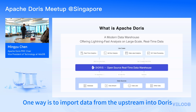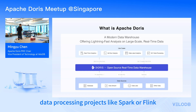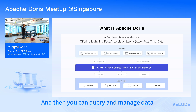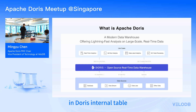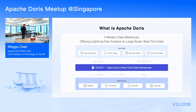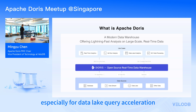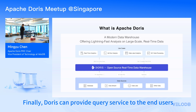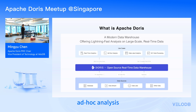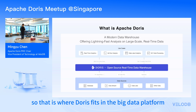Doris can access data in two ways. One way is to import data from upstream into Doris using a data pipeline or processing project like Spark or Flink, then query and manage data like a Doris internal table. The second way is to access upstream data using the connector framework, saving time on data import and conversion — especially for data lake query acceleration. Doris then provides query services like real-time analysis, ad hoc analysis, data lake query, and ETL data processing.